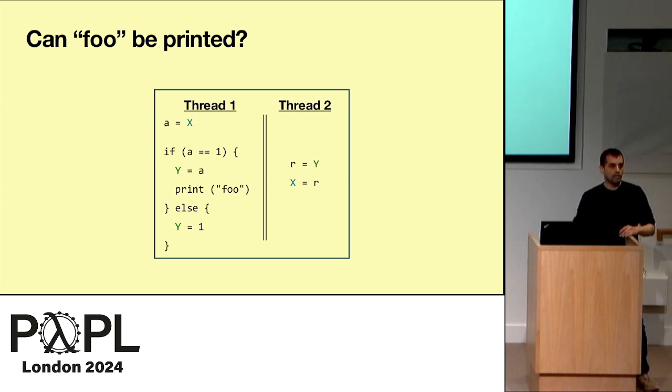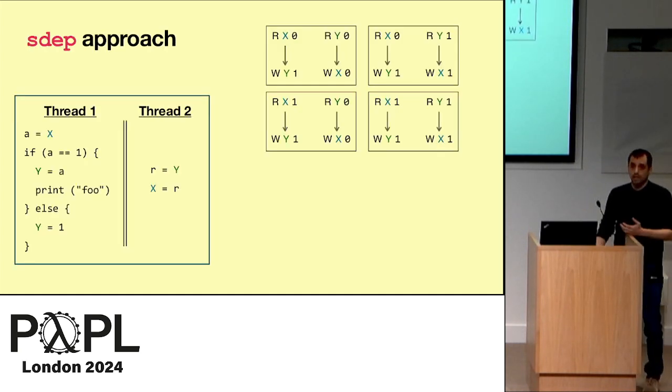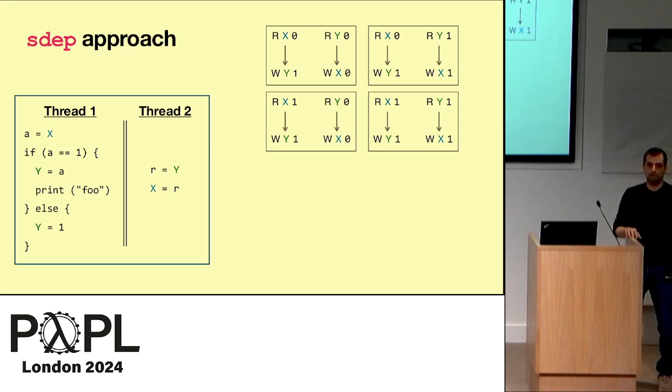First, we observe very simple compiler optimizations. It has to be allowed to print foo in this program. The compiler can change this a to one. This is just a trace preserving transformation. And then take this y equals one that appears in both branches to move before the local read of this local variable a. And then the hardware can reorder these accesses. So let's say these are relaxed accesses. The hardware can reorder them. And then if y equals one happens first, and then the second thread runs, it will write this one to x. And then I can read x. And then foo is being printed. So we want to allow this.